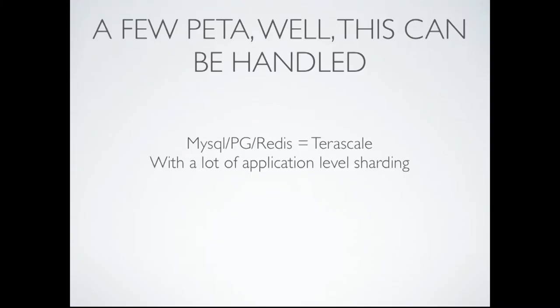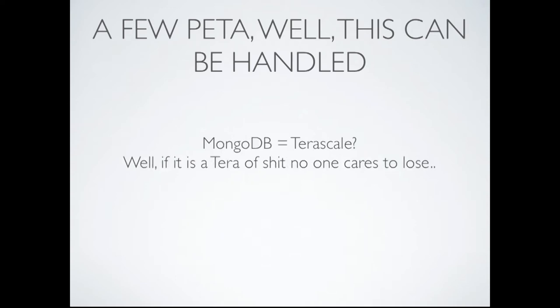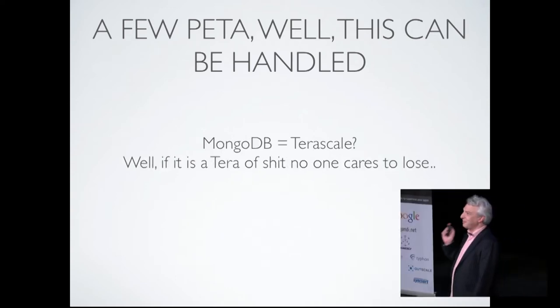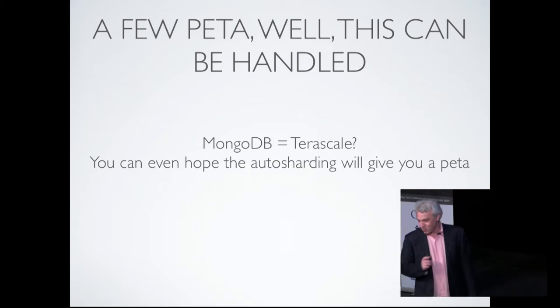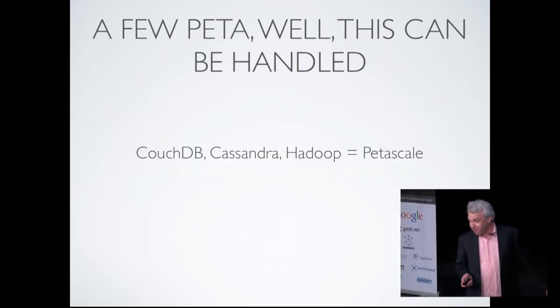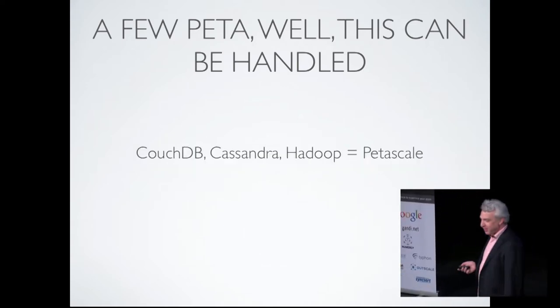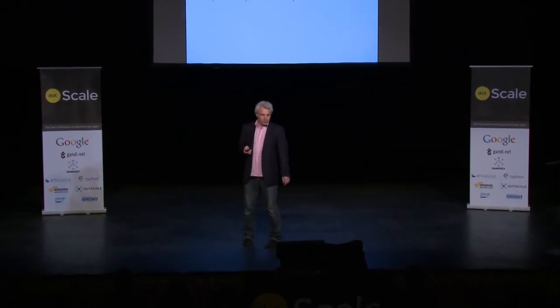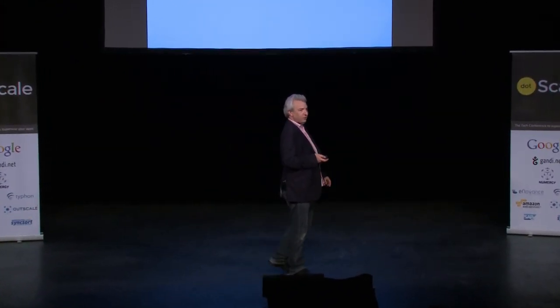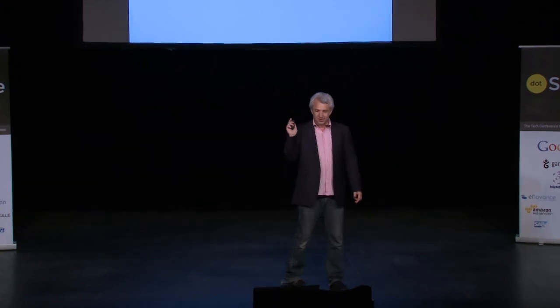And with a lot of application-level sharding, we can terascale it, maybe even more — I'll just let you read the slide. And in production, we have been at petascale with CouchDB, Cassandra, and Hadoop, but then you have really, really bought a lot of machines, right?